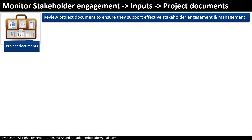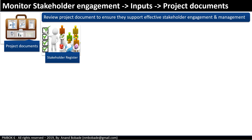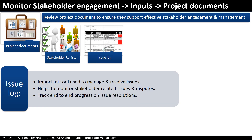Under project documents, the stakeholder register helps identify all stakeholders, which is a requirement for monitoring stakeholder engagement. The issue log is an important tool used to manage and resolve issues — it helps the project manager monitor stakeholder-related issues and disputes and track end-to-end progress on issue resolutions.